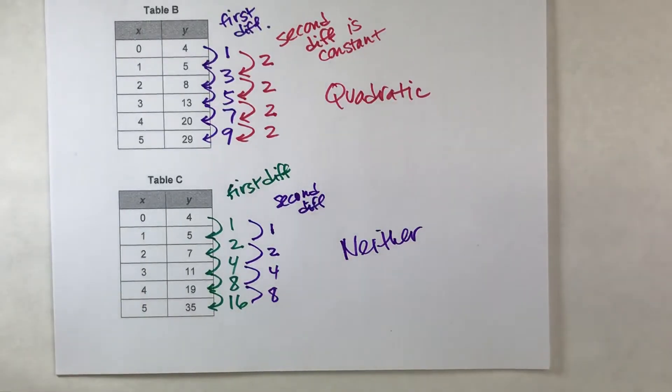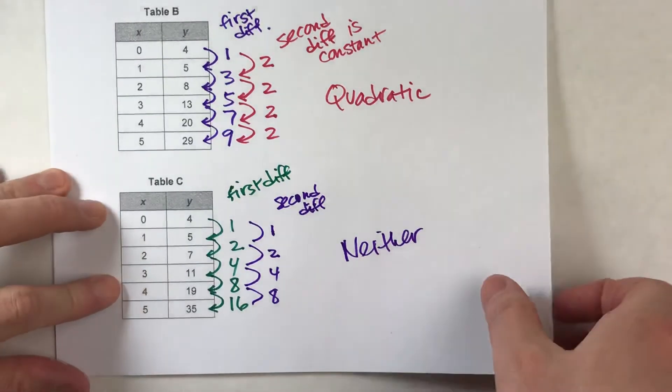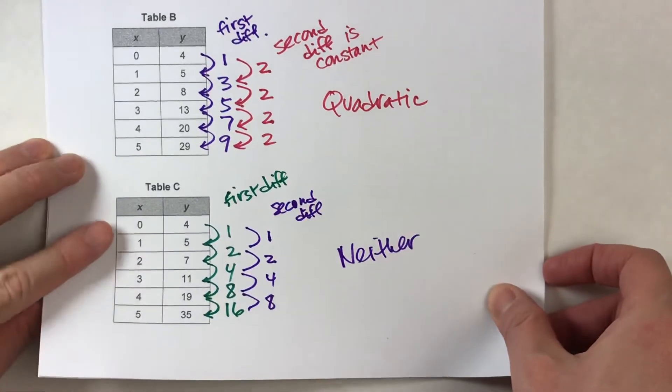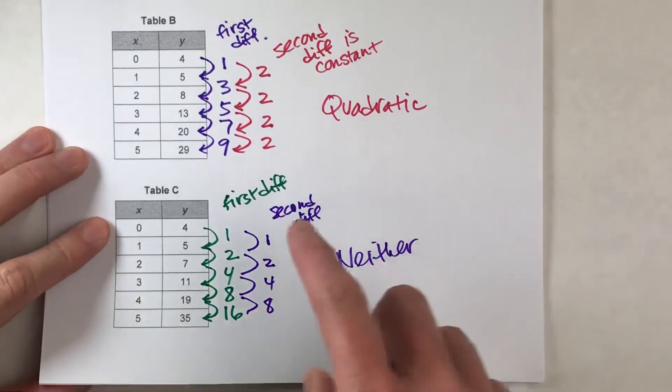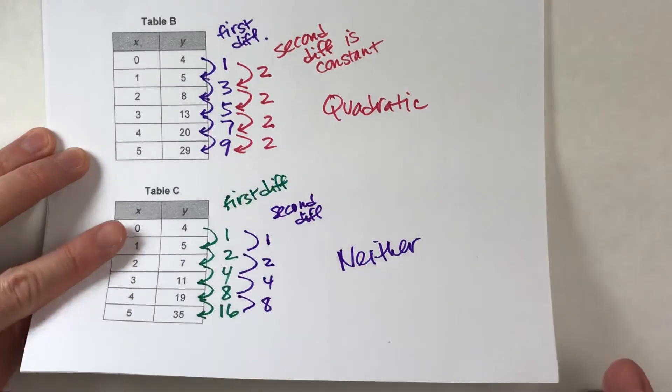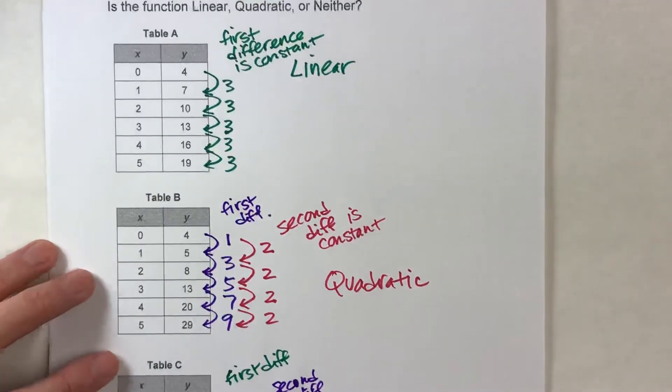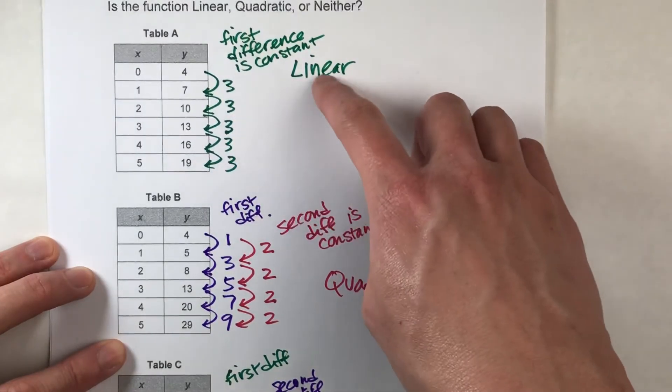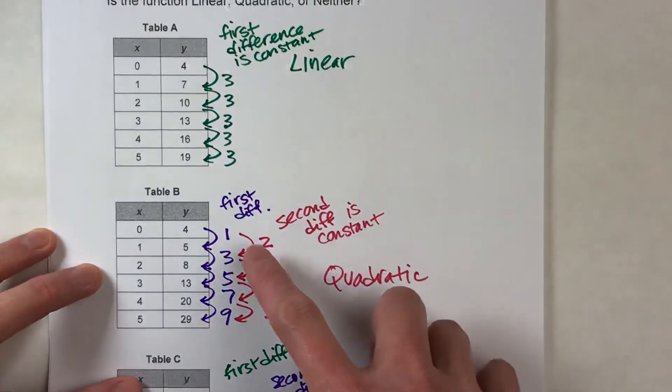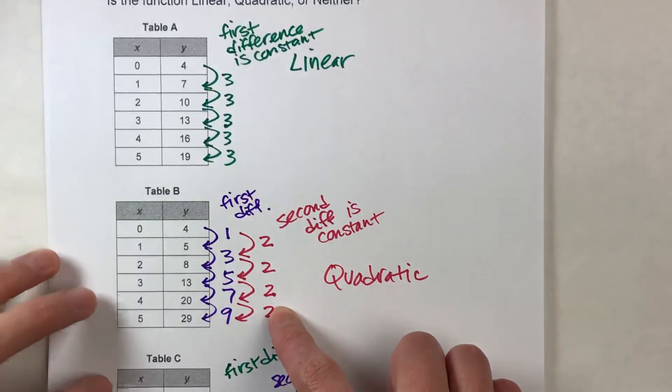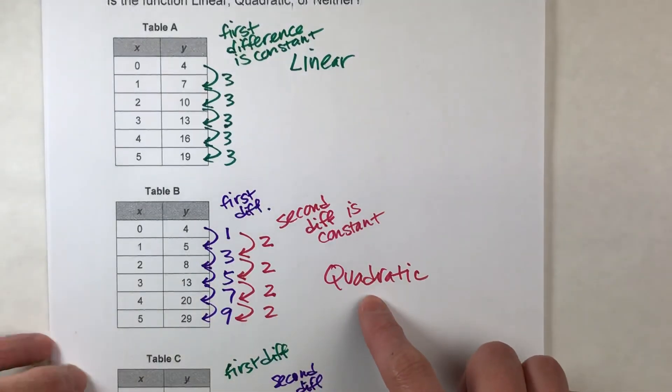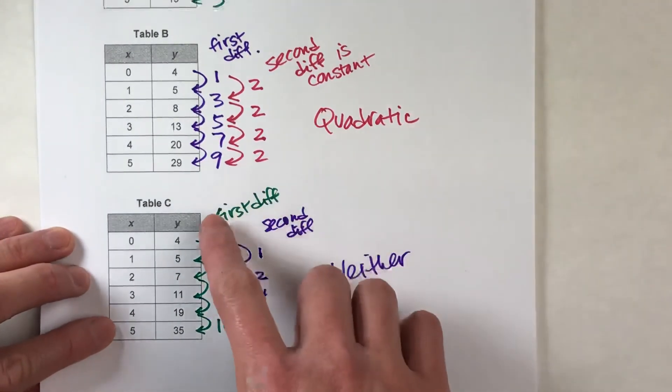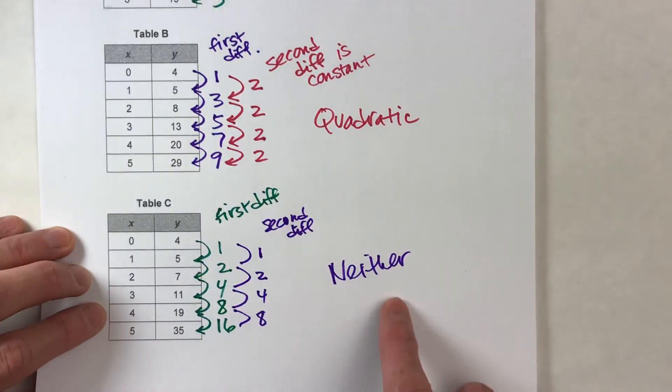So that's what we were looking at today, is just checking out to see the pattern of the differences. So again, if the first difference of your table is constant, it's linear. If the second difference of your table is constant, it's a quadratic. And if neither of those things happen, then it's neither.